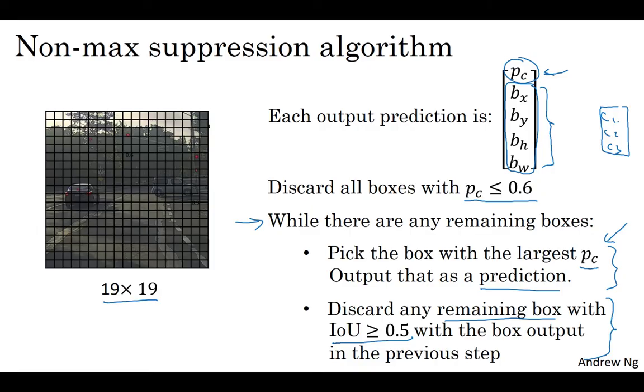I've described the algorithm using just a single object on this slide. If you actually try to detect three objects, say pedestrians, cars, and motorcycles, then the output vector will have three additional components. And it turns out the right thing to do is to independently carry out non-max suppression three times, one on each of the output classes. But the details of that I'll leave to this week's programming exercise, where you get to implement non-max suppression yourself on multiple object classes.